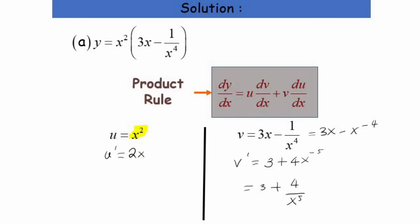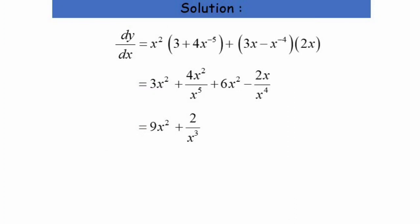Now let's substitute into the product rule formula: u·v prime plus v·u prime. Substituting u, v prime, v, and u prime that we found earlier, we expand the equation. We have x squared times 3 which gives 3x squared, and x squared times 4x to the power of negative 5 gives 4x squared over x to the power of 5.